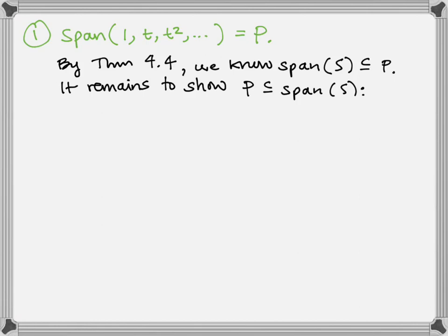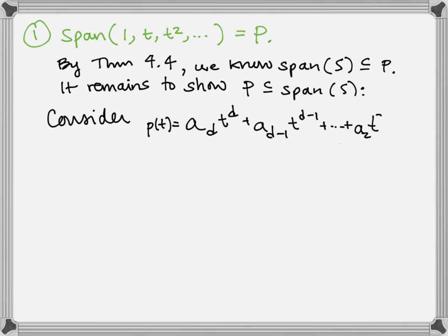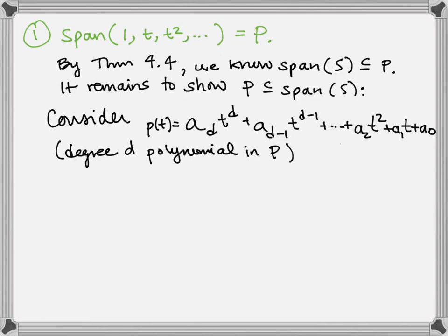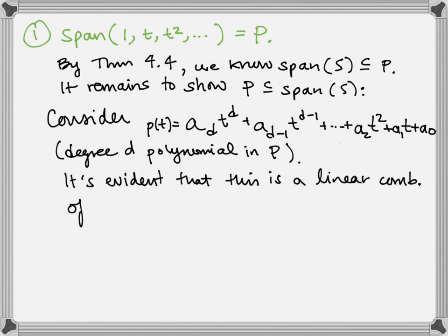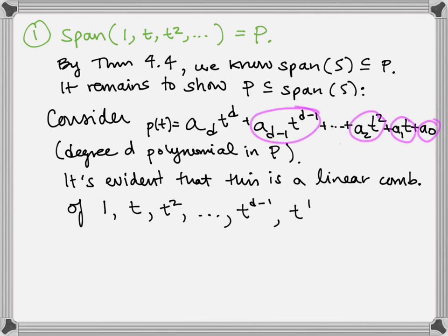We've only got one containment argument to do. We start by considering an element p of t — just some polynomial in my set P. Let's write it out: p of t looks like a_d times t to the d, plus a sub d minus one times t to the d minus one, plus so on and so forth. This is a degree d polynomial in our vector space P. It's evident that this is already a linear combination of 1, t, t squared, t to the d minus one, t to the d. The coefficients are real numbers, so I've got real number multiples of powers of t added together — that's just a linear combination of the first d elements of S.